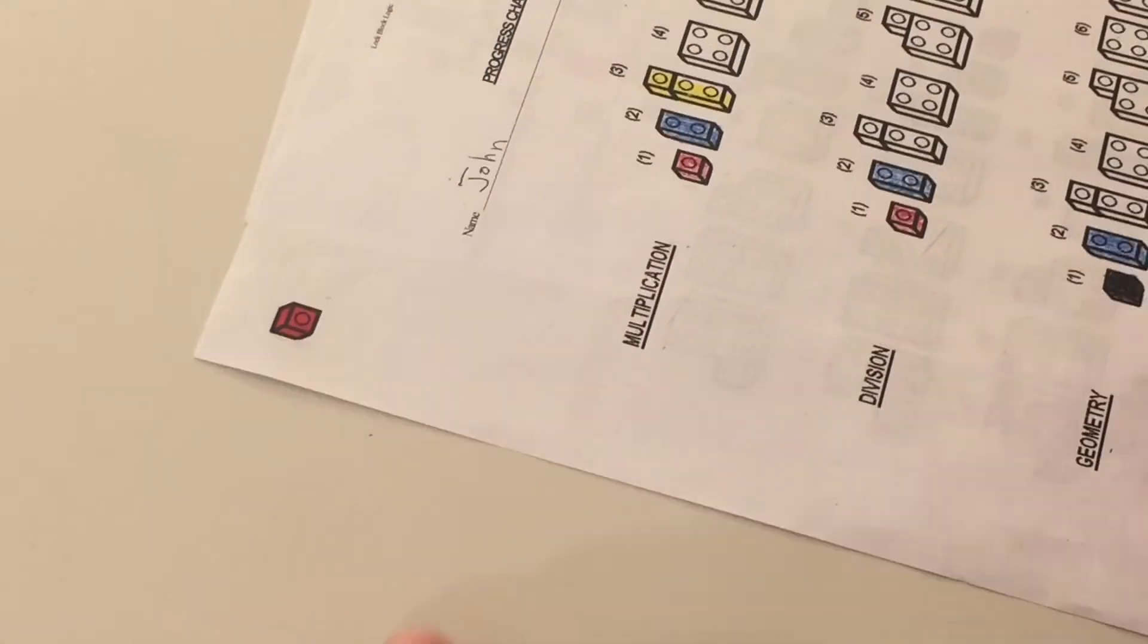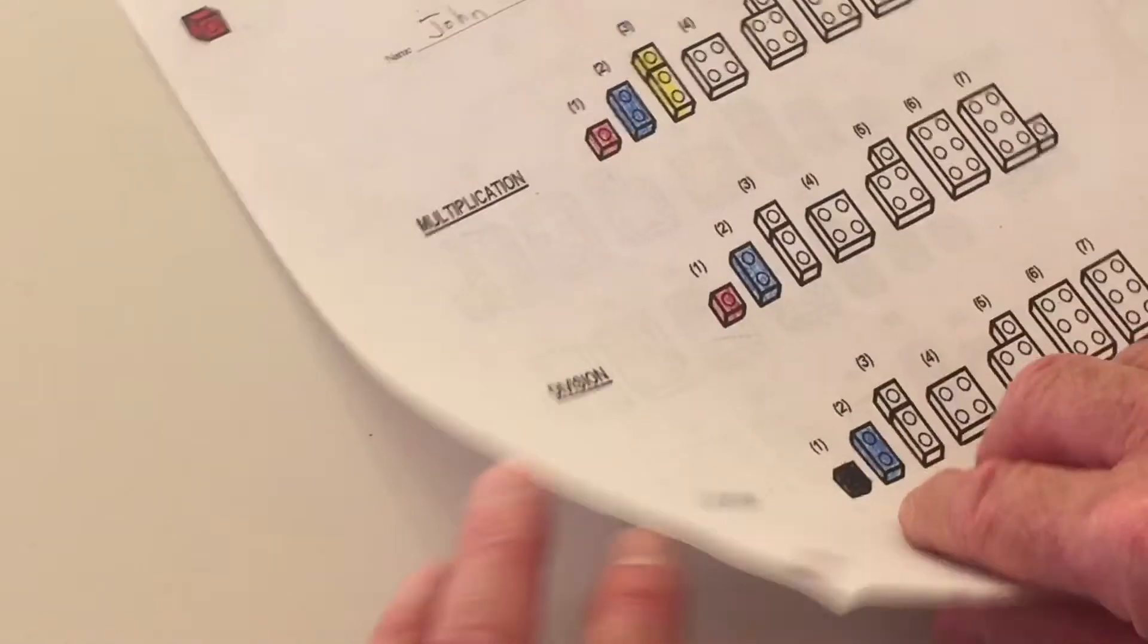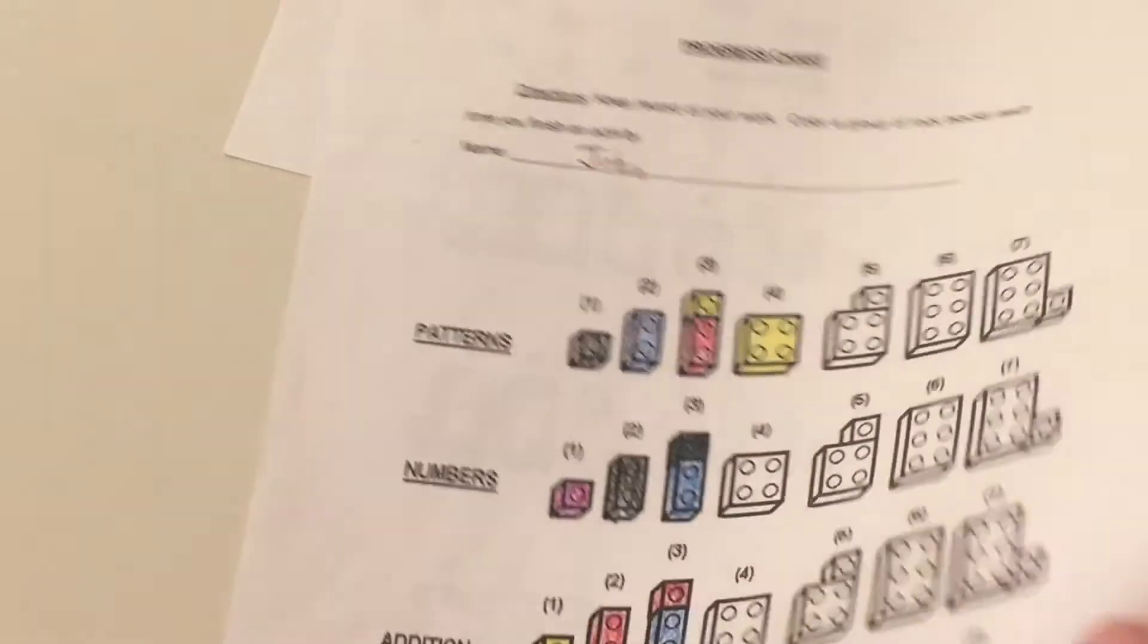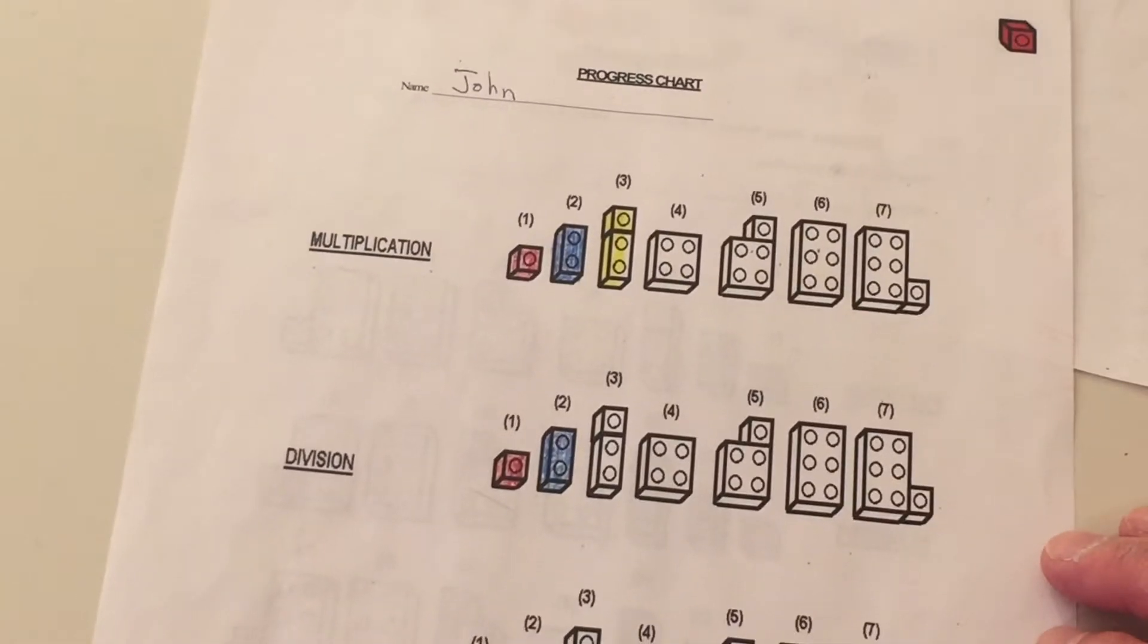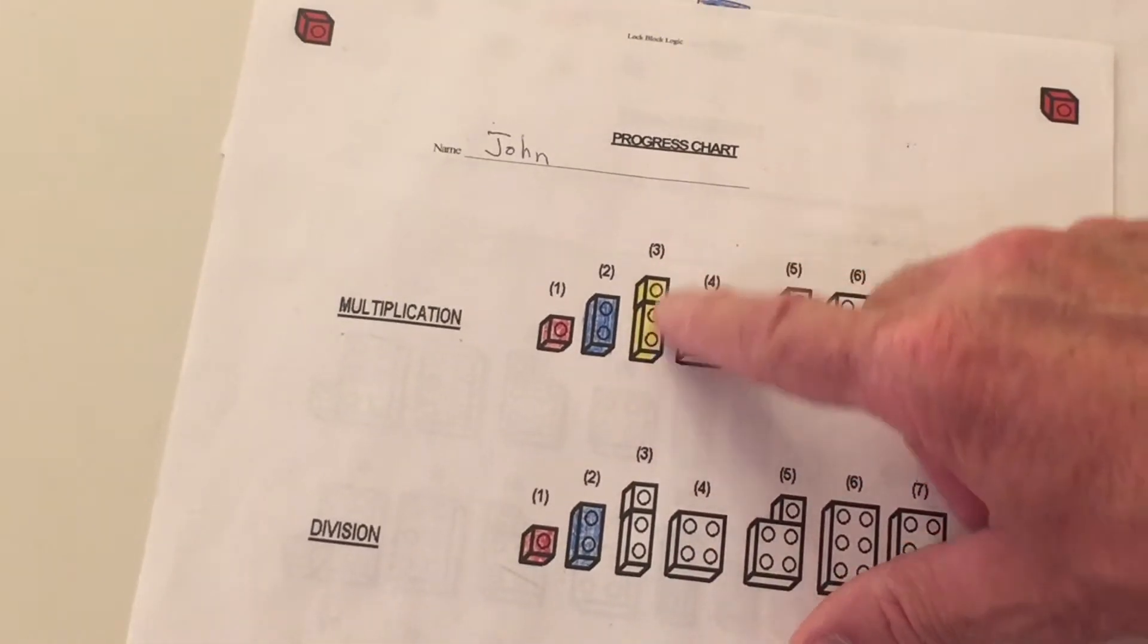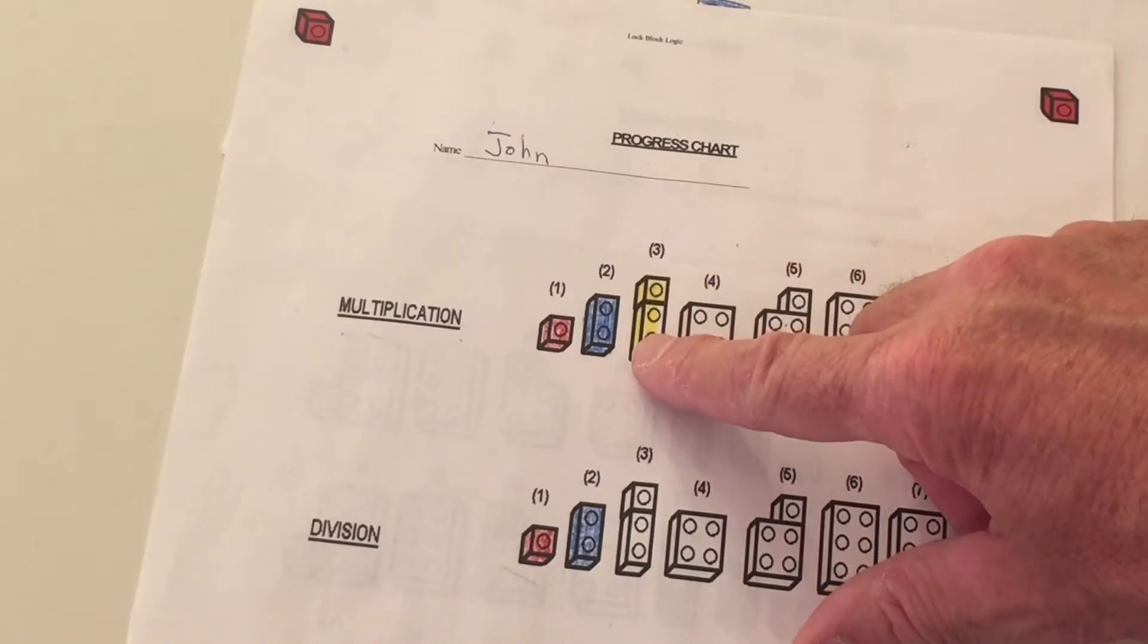We also need to mark our progress charts. So here's my progress chart that we've been working on. Oh, we've done a lot of work here so far. Lots of work. So I did activity number three. So I colored three, activity three. I colored it yellow.